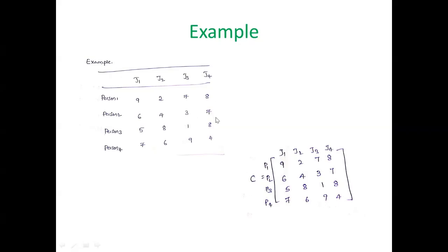Before checking all possibilities, we need to construct a cost matrix. Here you can consider all the persons and all the jobs and place the corresponding row and column values. Now you can easily understand this cost matrix. Let's start solving the problem.